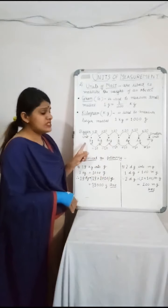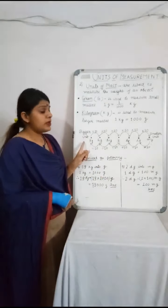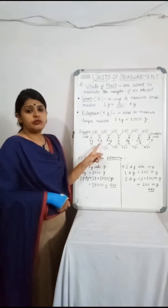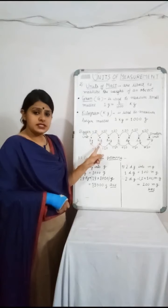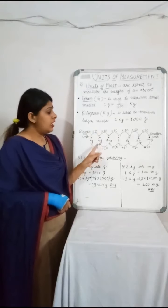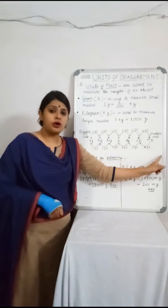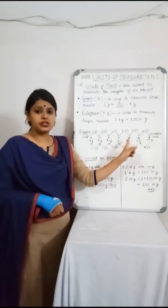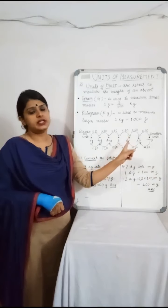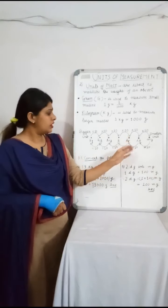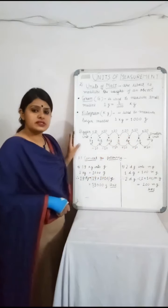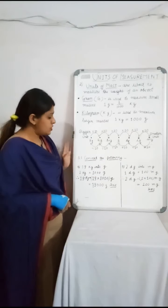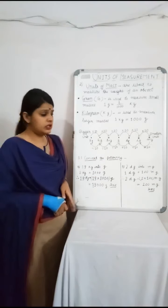As we move from a larger unit to a smaller unit, we always multiply by 10. Whenever we move from a smaller unit to a larger unit backwards, we always divide by 10 at each step. We will use this table to solve our conversions. Let's start with question number 1: Convert the following.